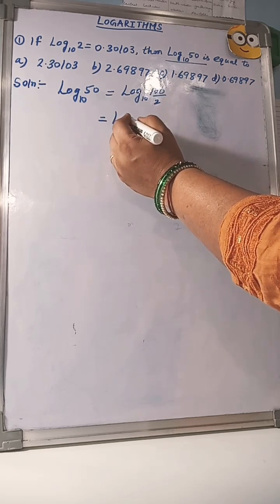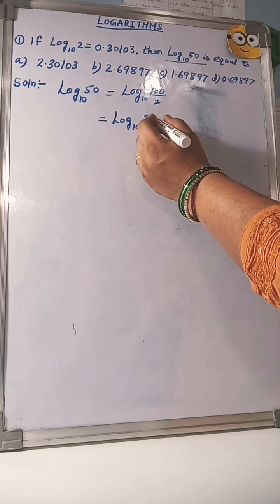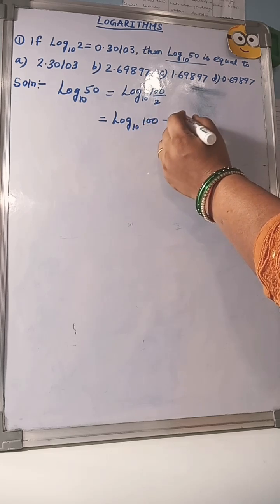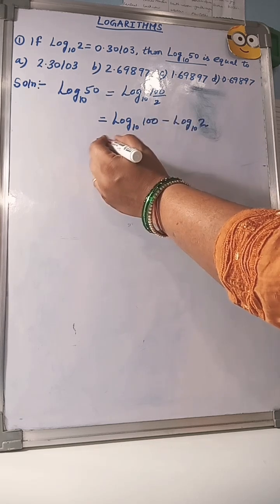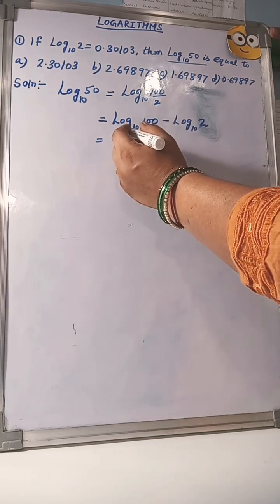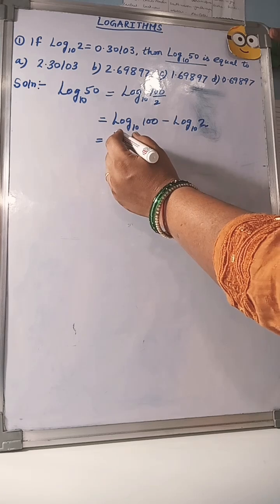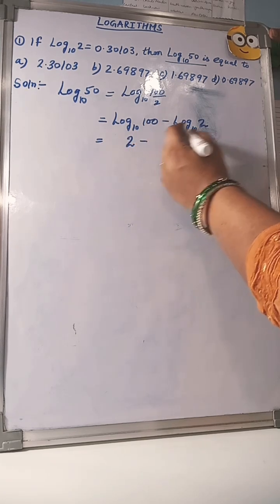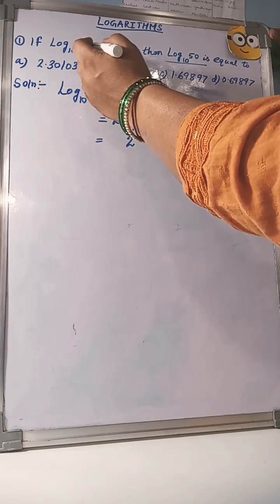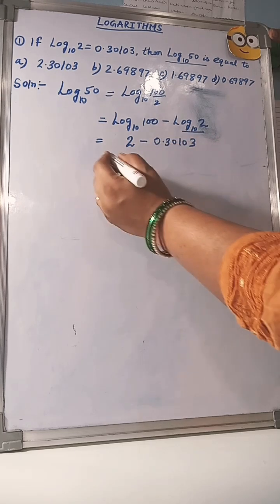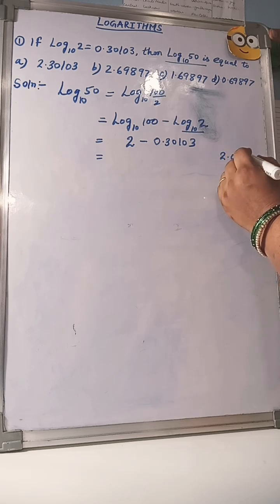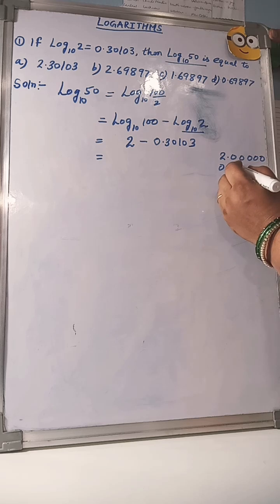Now, use the quotient law of logarithms. Log(100/2) equals log 100 minus log 2 to the base 10. You know log 100 equals 2, and the value of log 2 is given as 0.30103. So we have 2 minus 0.30103.